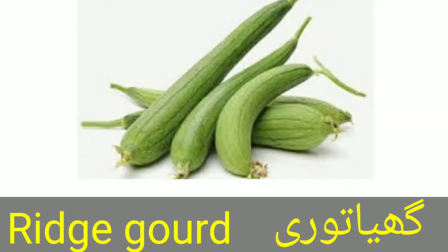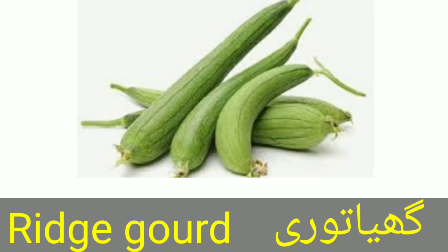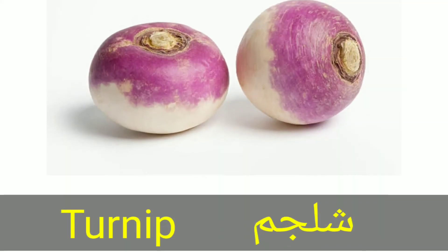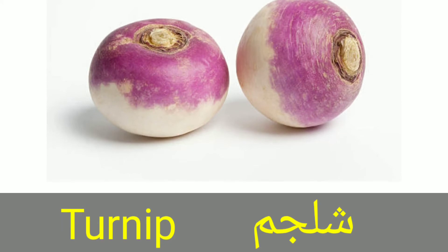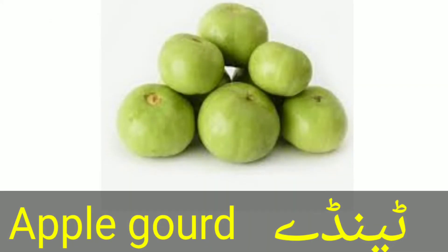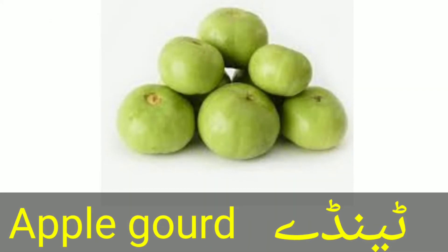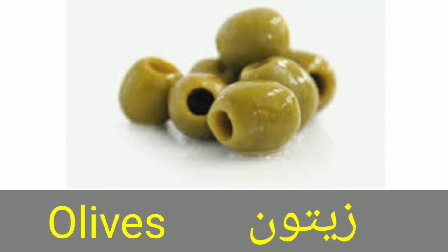Ridge gourd — ghiatori. Turnip — shalgam. Apple gourd — tinday. Olives — zaytoon.